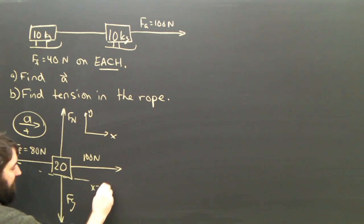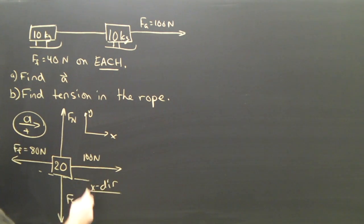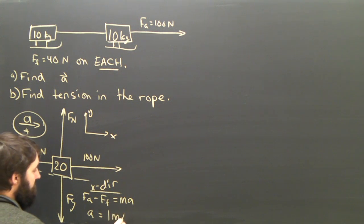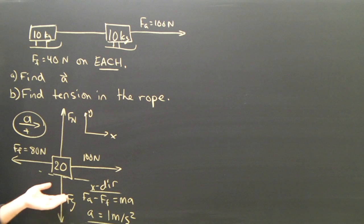In the x-direction, Newton's law tells me that Fa minus Ff equals ma, and rearranging, I get a equals 100 minus 80 divided by 20, which is 1 meter per second squared. So the acceleration of the entire system is 1 meter per second squared.